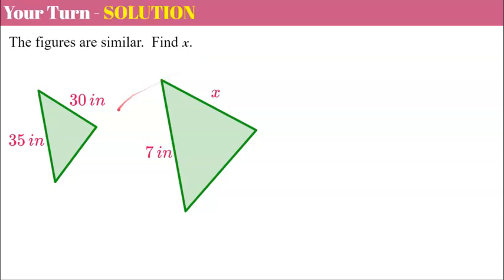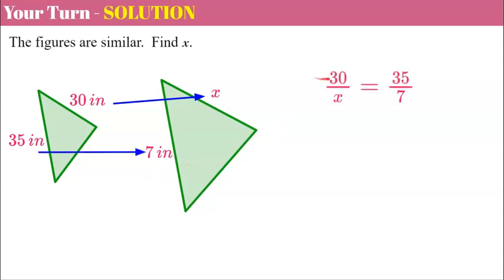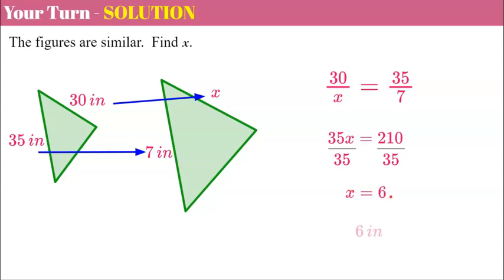Welcome back. First we identify that our corresponding sides: 30 corresponds to X, and 35 corresponds to 7. Here's our proportion — 30 to X equals 35 to 7. Using cross products: 35 times X equals 30 times 7, which is 210. Divide both sides by 35, and X is equal to 6, or 6 inches.